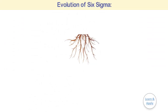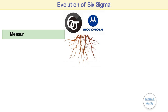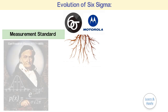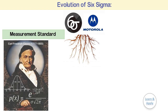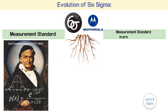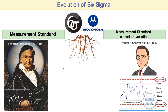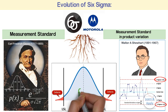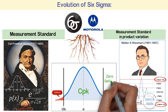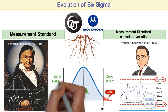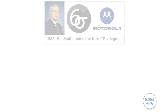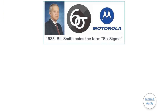The roots of Six Sigma as a measurement standard can be traced back to Carl Friedrich Gauss, who introduced the concept of the Normal Curve. Six Sigma as a measurement standard in product variation can be traced back to the 1920s, when Walter Shewhart showed that three sigma from the mean is the point where a process requires correction. Many measurement standards such as CPK, Zero Defect, etc. later came on the scene, but credit for coining the term Six Sigma goes to the Motorola engineer named Bill Smith.